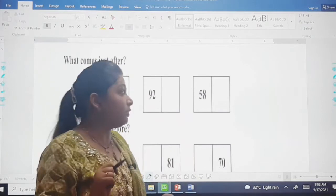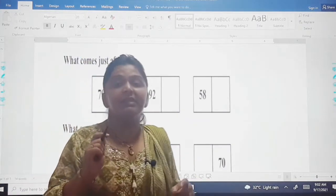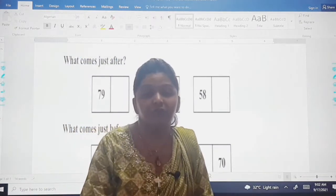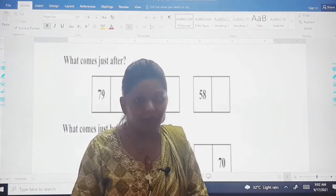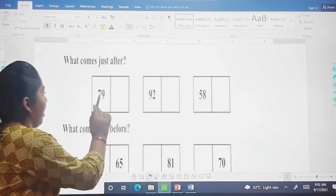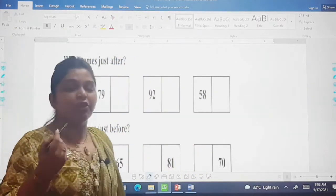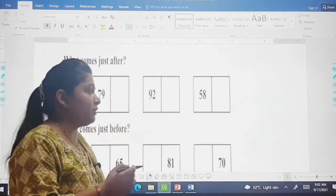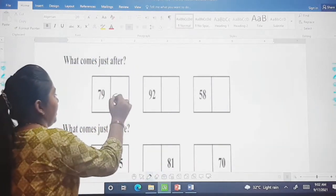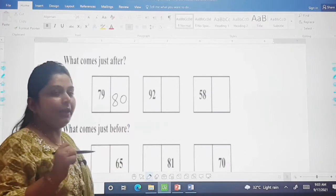Now what is the question over here? What comes just after? After means badwala number. Now after 79, which number comes? That is your number 80. So you will write your number 80.